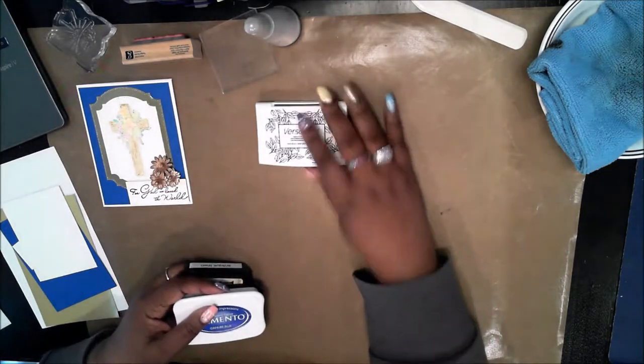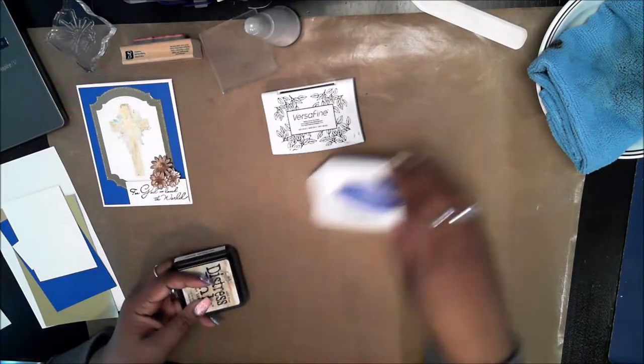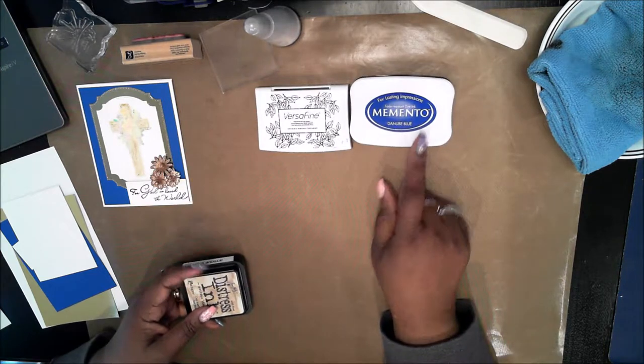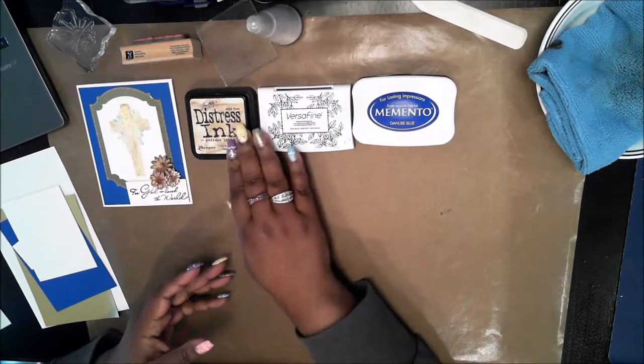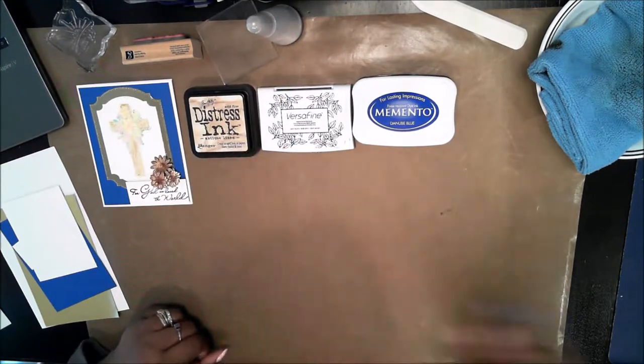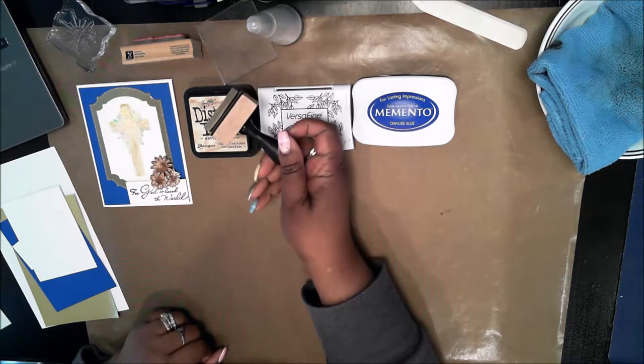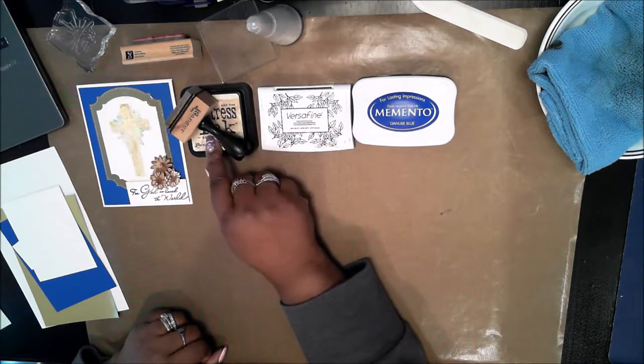The inks I'm using is VersaFine Onyx Black. I'll be using the Danube Blue Memento, the Distress Ink Antique Linen and I will also be using a Ranger blending tool for the Distress Ink.